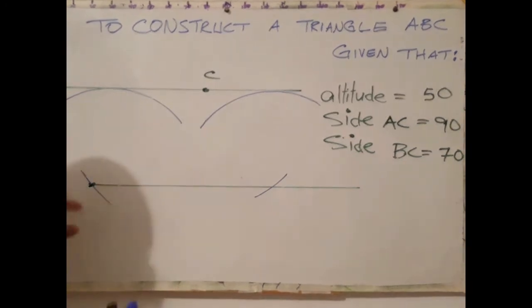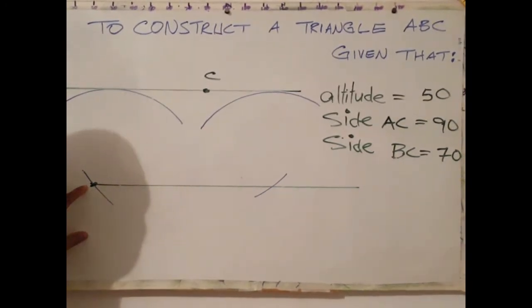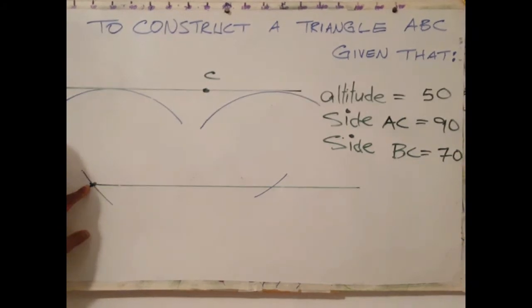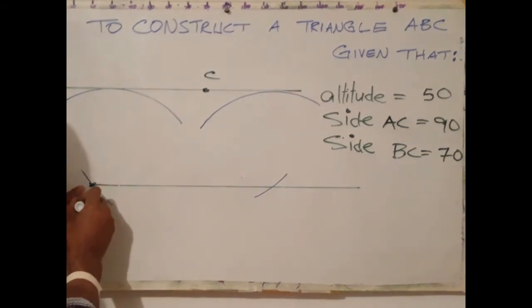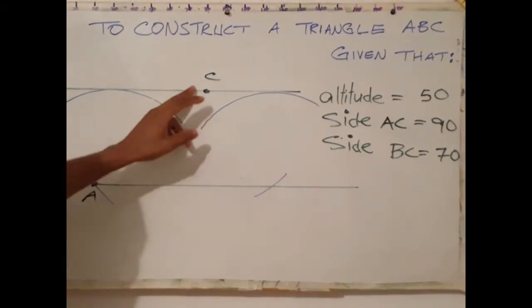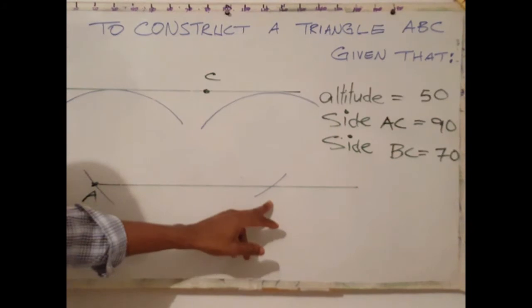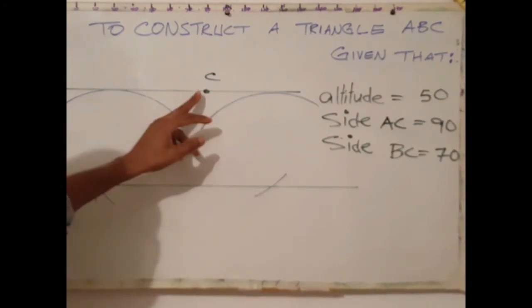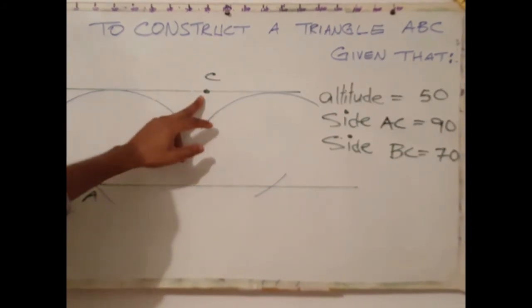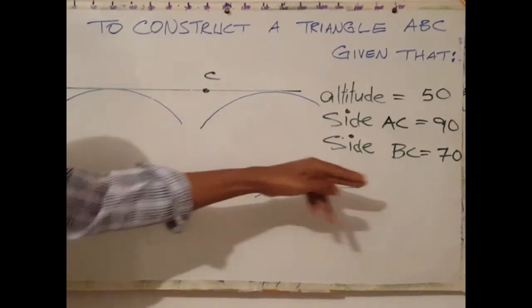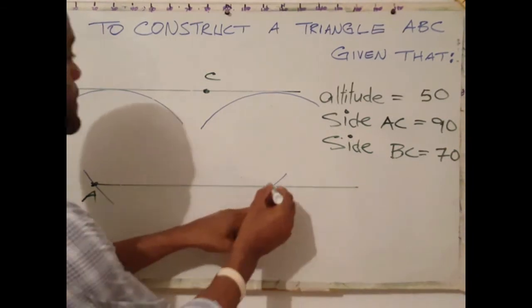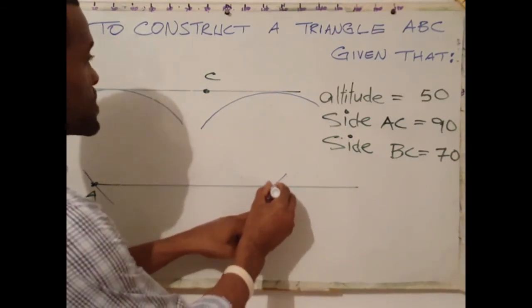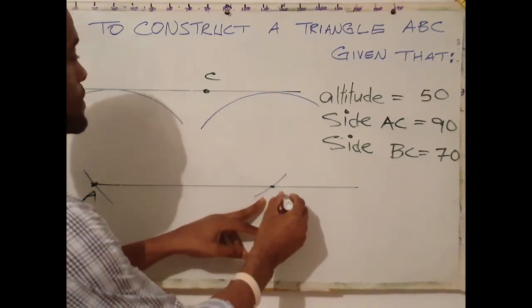At the point where the 90 millimeter arc cuts the line, label this point A. At the point where the BC arc — which is 70 millimeters — cuts the line, label this point B.